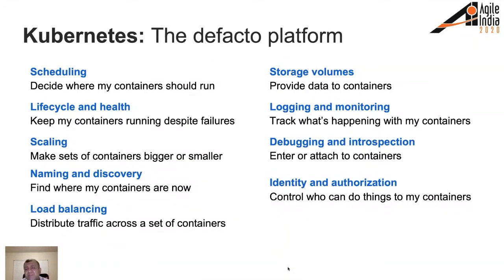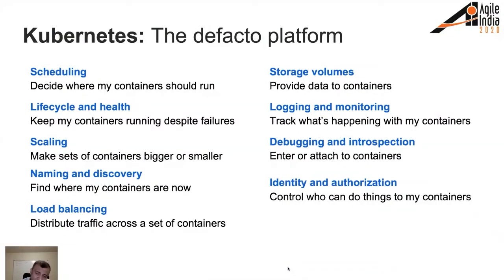Kubernetes is a descriptive system — you describe the state of your infrastructure, and Kubernetes tries to maintain that state. When running services at scale, things go beyond your control: machines crash, outages happen. You describe your ideal system state, and Kubernetes maintains it — every time there's a deviation, whether an outage or container crash, it shuts down the failing container and restarts another. Think of it as an operating system for a data center. It handles scheduling, lifecycle management, scaling, load balancing, logging, monitoring, and more.